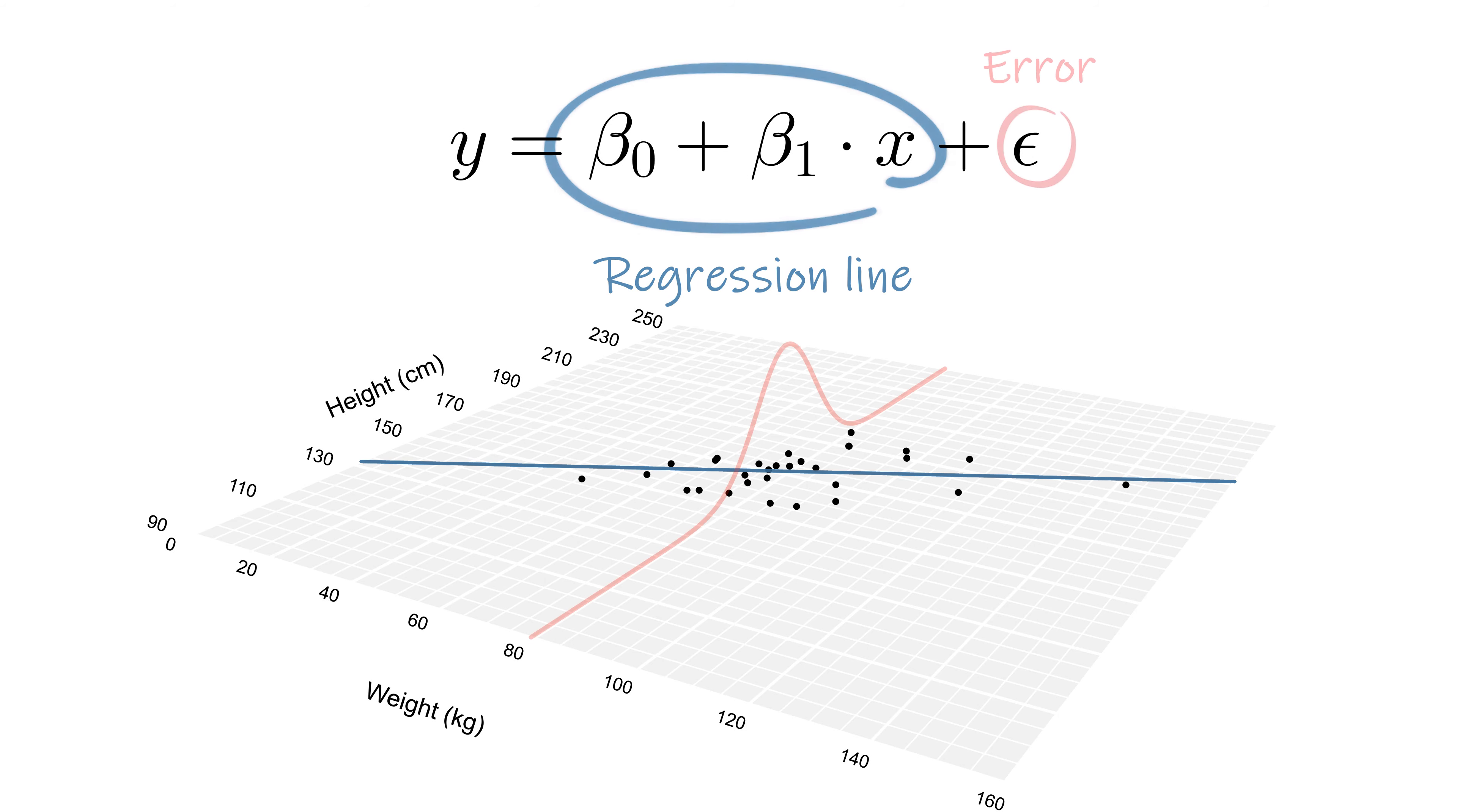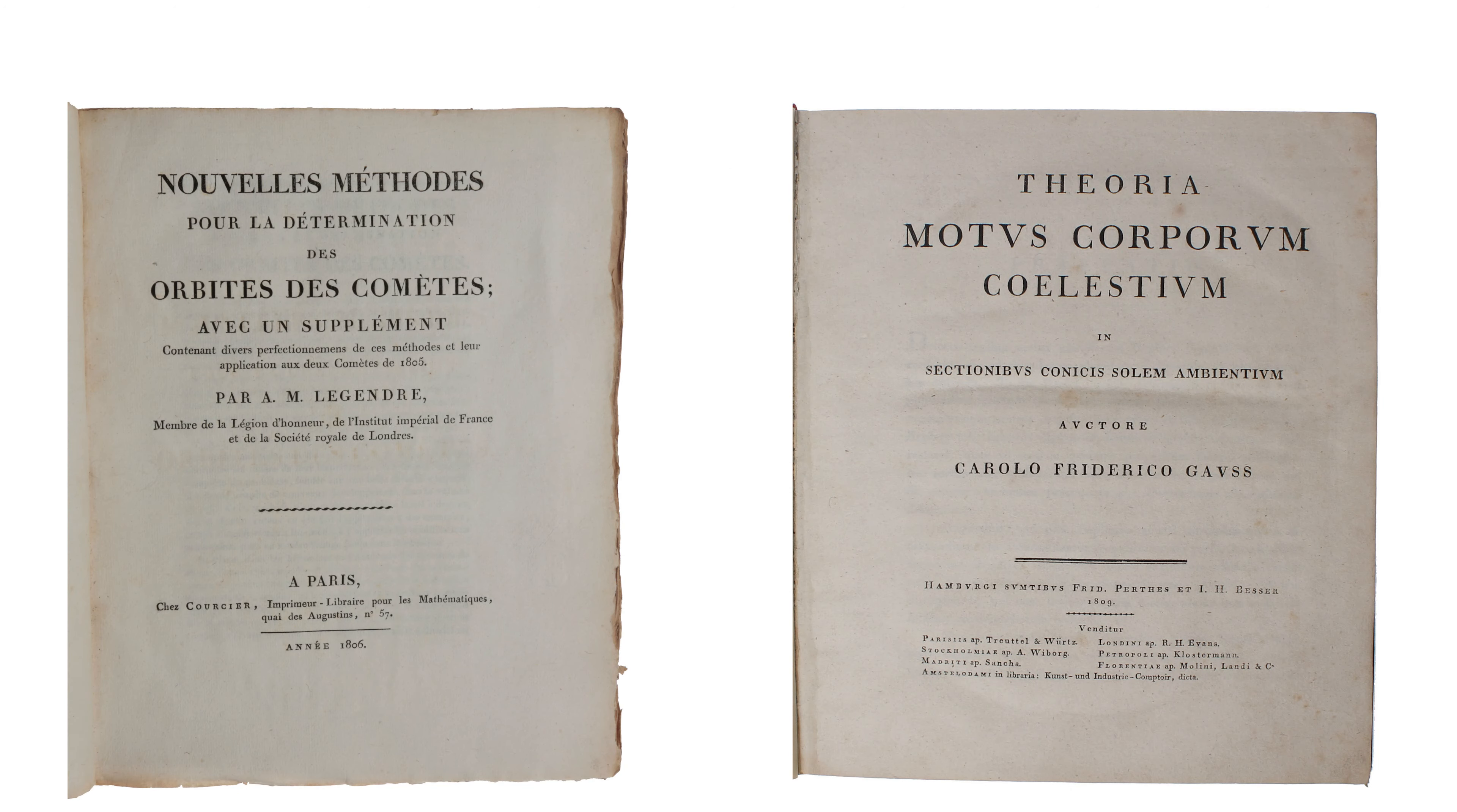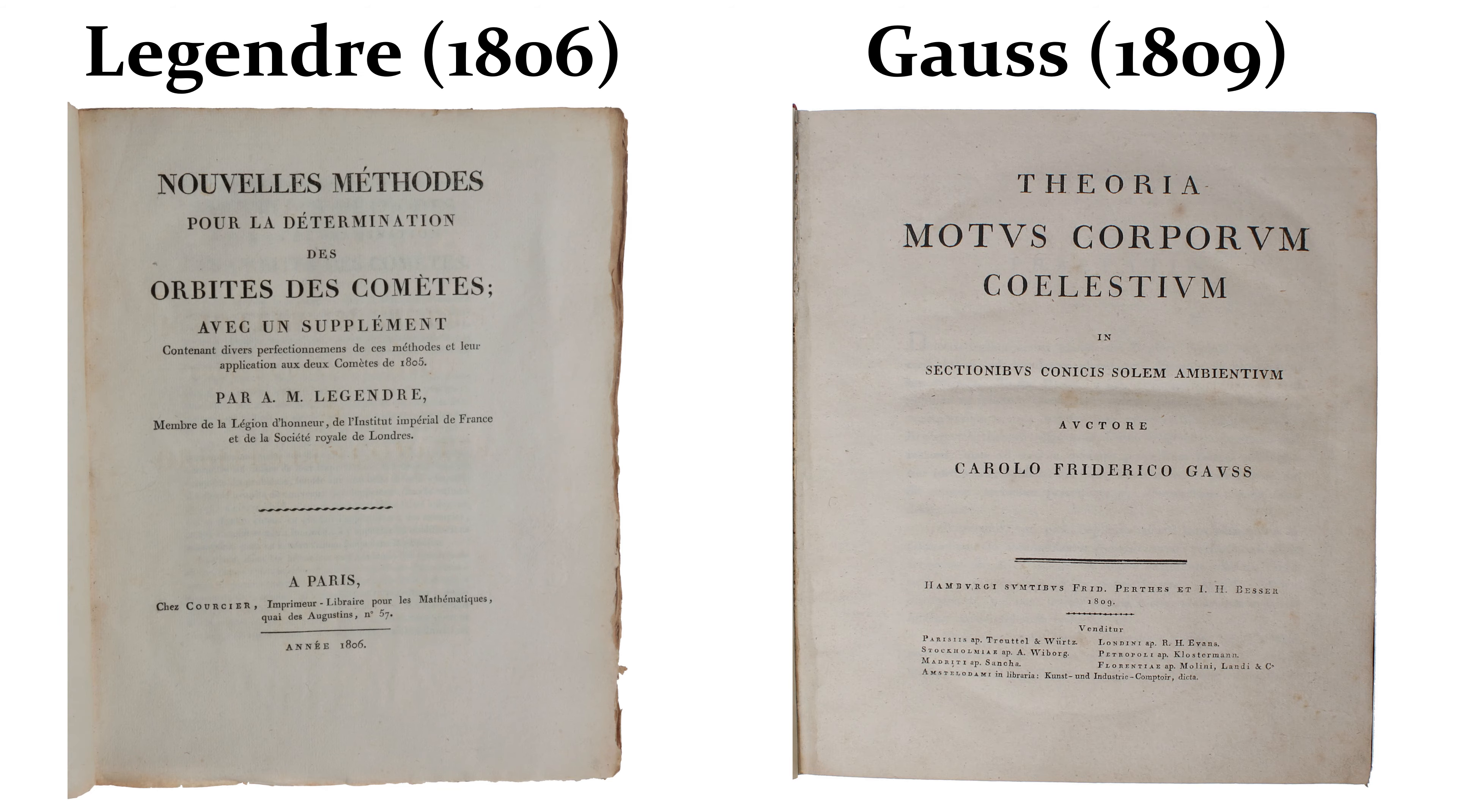A linear function with normally distributed errors around it is called ordinary linear regression. Not because it is ordinary or what you typically expect, but because it is one of the oldest techniques around, dating back over two centuries.